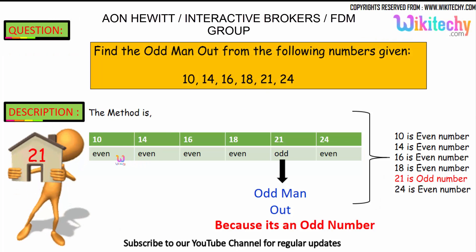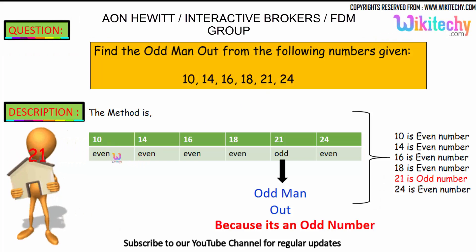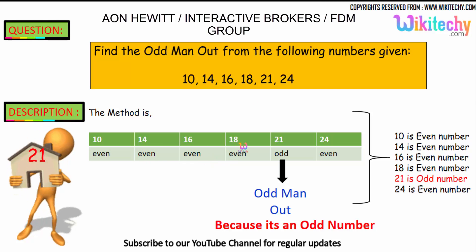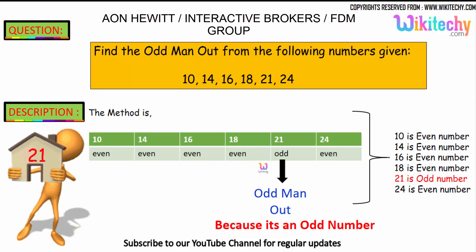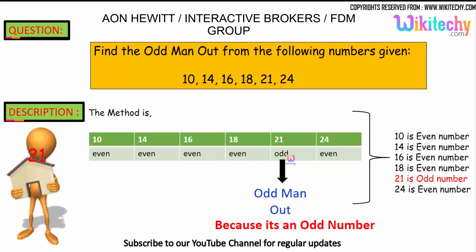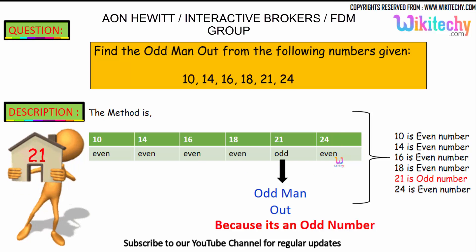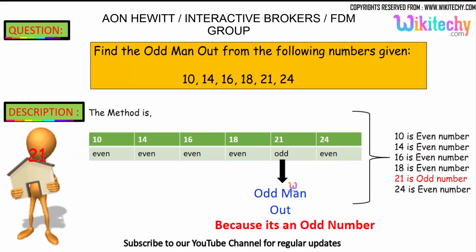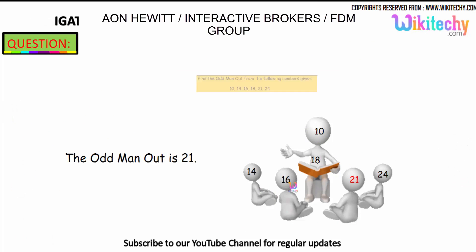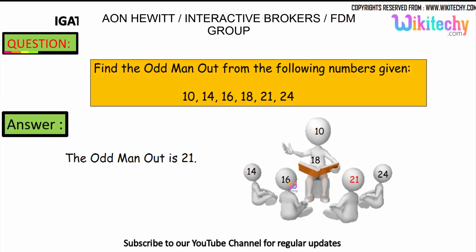Okay, that's the answer. We got 10 — even number. 14 — even number. 16 — even number. 18 — even number. 21 is an odd number. And 24 is an even number. So 21 is the odd man out here. That's the odd number. The answer is 21.